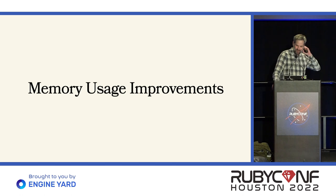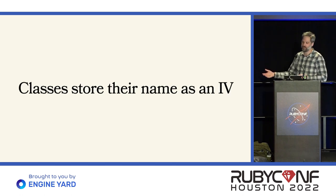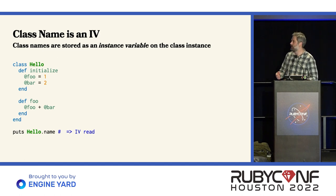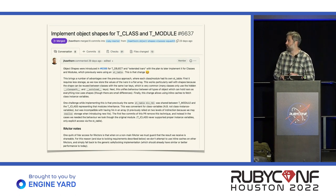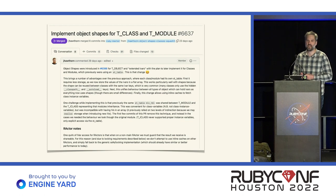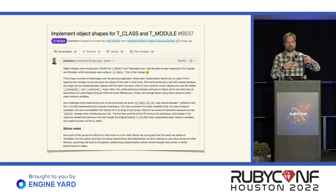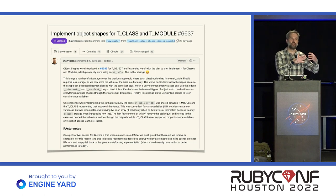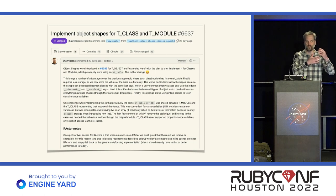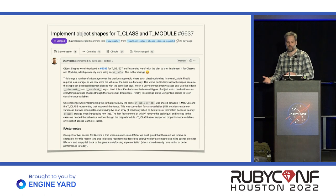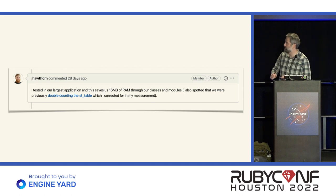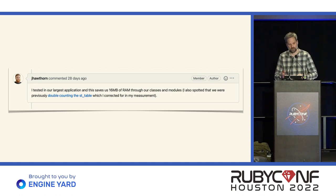Memory usage improvements: classes store their names as instance variables. So if you do hello.name, that's read as an instance variable. John Hawthorne was able to convert classes to use object shapes as well — he sent a patch to do this. All classes have a different class which is a metaclass, so we had to duplicate all this information among all classes. But since classes can use shapes now, we know all of these classes have the same shape, and we're able to amortize that cost. In his application — I think this is GitHub's application — they were able to save about 16 megabytes worth of memory just on this one change.